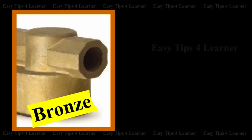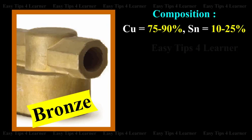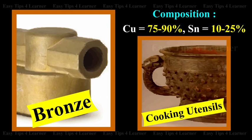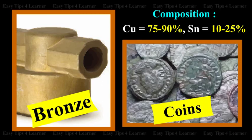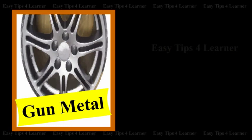Bronze is an alloy of copper with the composition: copper 75 to 90 percent, tin 10 to 25 percent. The uses are for making cooking utensils, statues, coins, etc.